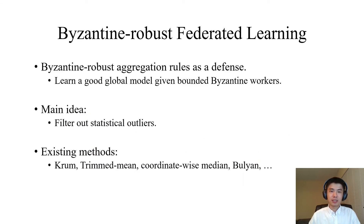And there comes Byzantine robust federated learning. In Byzantine robust federated learning, Byzantine robust aggregation rules are proposed as a defense. They claim that with these Byzantine robust aggregation rules, they can learn a good global model even if some bounded number of workers are Byzantine — in other words, send arbitrary local models. The main idea is to filter out statistical outliers among local models. Existing methods include Krum, trimmed mean, coordinate-wise median, and Bulyan. We will evaluate these methods in our work.